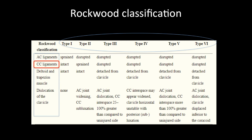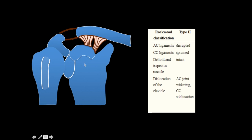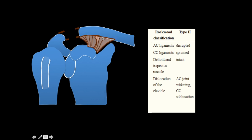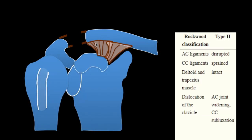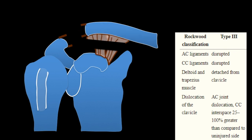In Type 1, the AC ligaments are sprained and everything else is intact — there is no dislocation of the clavicle. In Type 2, the AC ligaments are disrupted causing widening of the joint space, and the CC ligaments are sprained but not torn — there can be some increase in coracoclavicular distance, usually less than 25% of normal. In Type 3, there is AC joint injury as well as CC ligament injury, resulting in AC joint dislocation, with possible injury to deltoid and trapezius attachments — the CC distance is increased by 25 to 100% of normal (less than or up to twice normal).